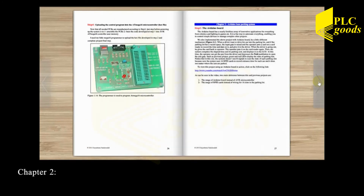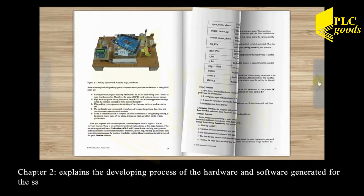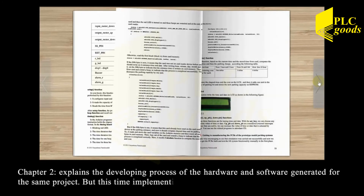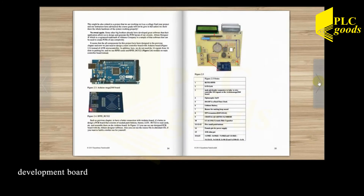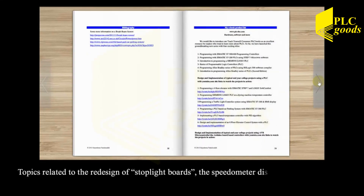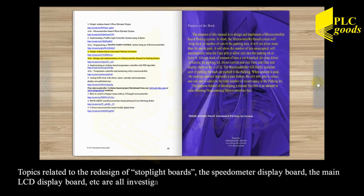Chapter 2 explains the developing process of the hardware and software generated for the same project, but this time implementing the Arduino Mega 2560 development board in detail to construct the same project. Topics related to the redesign of stoplight boards, the speedometer display board, the main LCD display board, etc. are all investigated in this chapter.